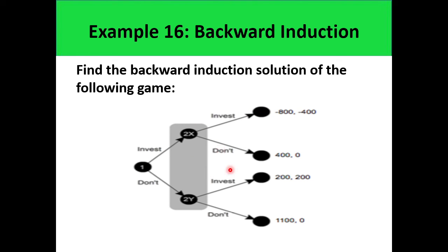Let's revisit this with another walkthrough. In this sub-game, it is player 2 who makes the decision — player 2 will either invest or not invest. As a rational player, player 2 would rather choose don't invest, so that arm of the tree will be erased. Similarly, in the other sub-game, player 2 would rather choose to invest than not invest, so that portion of the tree will be erased.